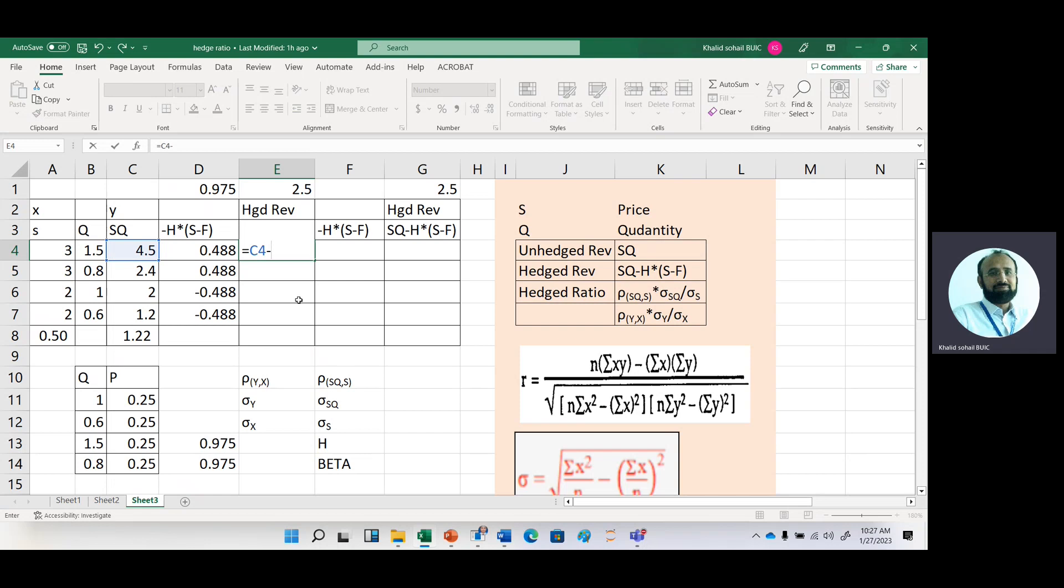And then we calculate its variability. Then we will check with the help of optimal hedge ratio whether this is reduced or not. Now the variability of this hedge revenue is 0.91.